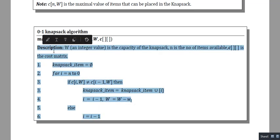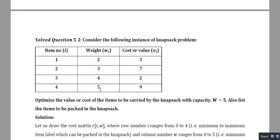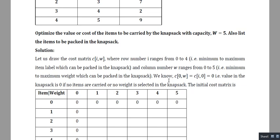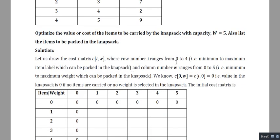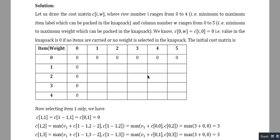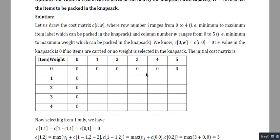Let us take a new example with four items, with given weights and costs, and knapsack capacity W = 5. We need to find the cost matrix. The dimension of the cost matrix is (number of items + 1) × (W + 1), so it is a 5 × 6 matrix. The number of items is four and the maximum weight capacity is five.